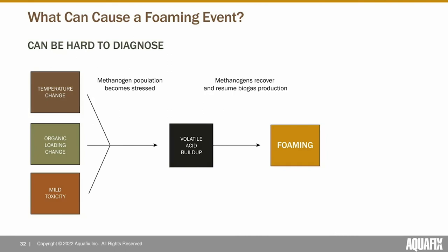Foaming can be pretty hard to diagnose the cause of when it's occurring. There are many things that lead to a stressed methanogen population, increasing volatile acid levels and making foaming more likely: a temperature change, an organic loading change, or mild toxicity. The methanogens go on break, you start to see increased volatile acids, and then once the stressful conditions ease a little bit, they kick back in, produce a bunch of biogas, and that's where you'll see foaming in most cases.